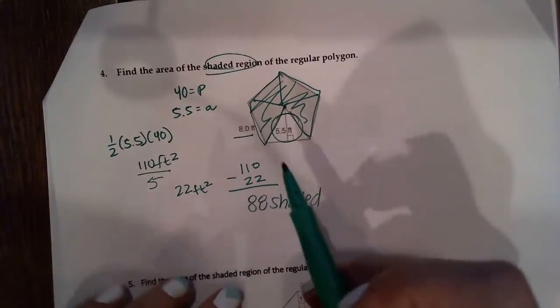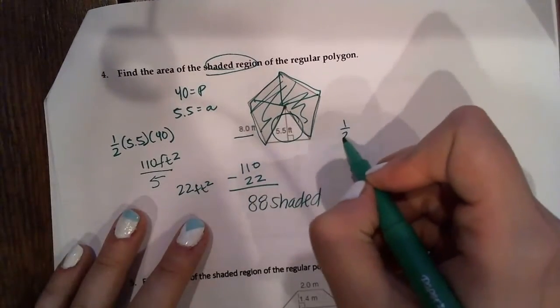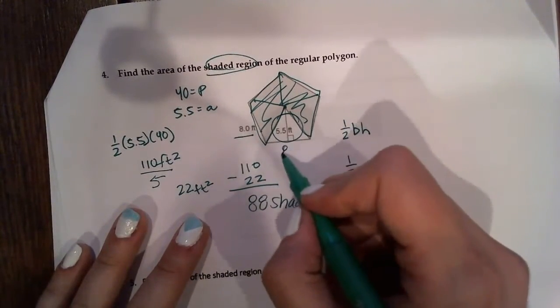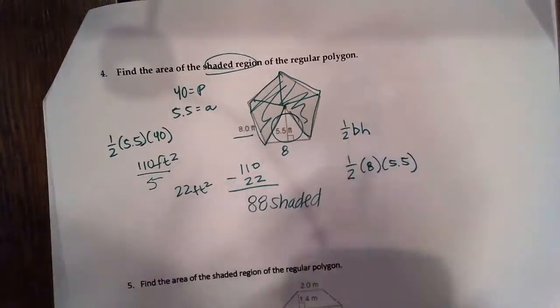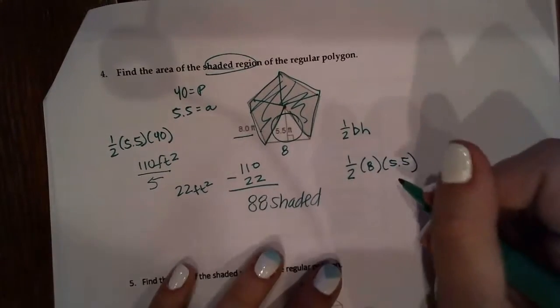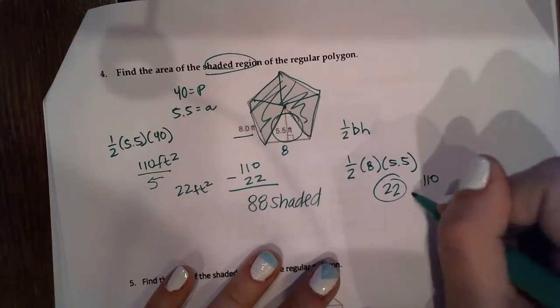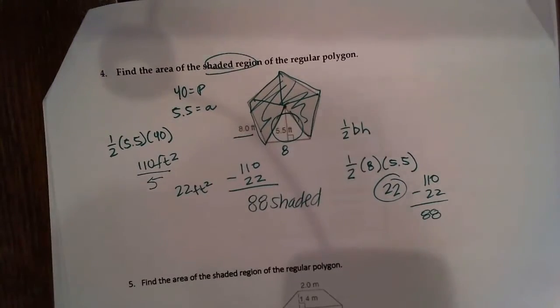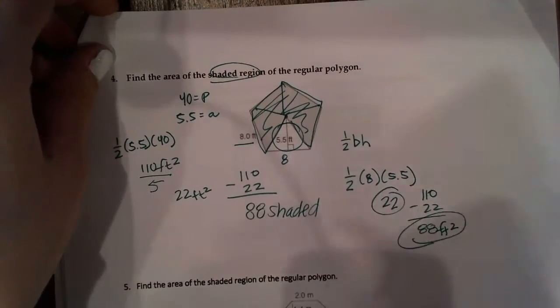I'm going to double check by using the formula we know for a triangle, which is 1 half base times height. 1 half, my base is 8, and my height is 5.5. And I got 22, and again, I could do 110 minus 22, and I'd get 88. So 88 feet squared is the shaded region.